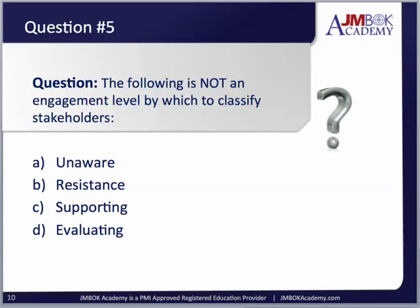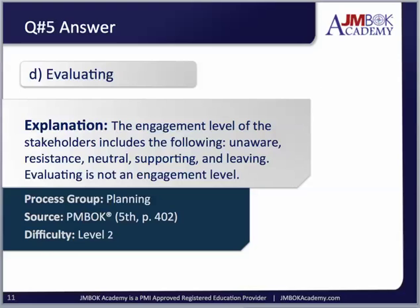Question number five — the final one for this lesson. The following is not an engagement level by which to classify stakeholders: Unaware, Resistance, Supporting, or Evaluating. The answer is Evaluating. The engagement levels of stakeholders include: Unaware, Resistance, Neutral, Supporting, and Leading. Evaluating is not an engagement level.